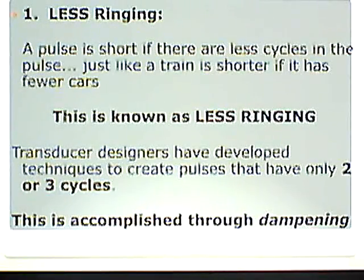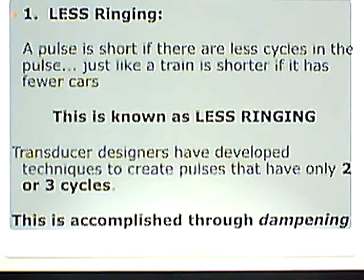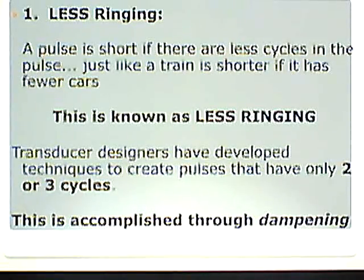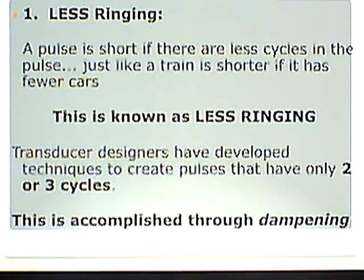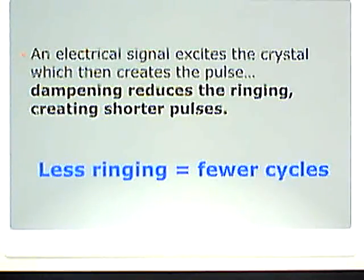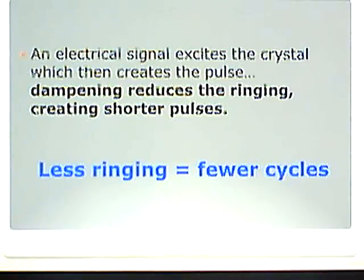Less ringing: a pulse is short if there are fewer cycles in the pulse, just like a train is short if it has fewer cars. This is known as less ringing. Transducer designers have developed techniques to create pulses with only two or three cycles through a process called dampening — like hitting a triangle and then stopping it with your hand to prevent it from ringing. An electrical signal excites the crystal, which creates the pulse. Dampening reduces ringing, creating shorter pulses: less ringing equals fewer cycles.